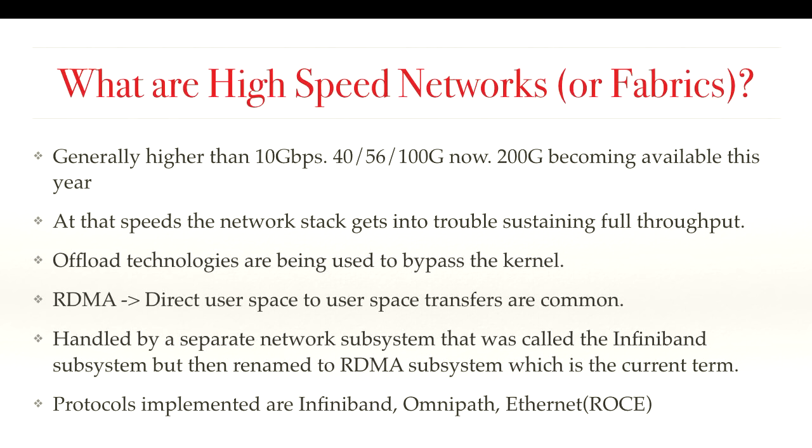At that speed, the regular network stack just gets into trouble sustaining that throughput — it's not possible — because the latency going through the network stack is extremely high compared to the speed of packets on the wire. So there are often techniques used to bypass the kernel. Then there's something called RDMA — remote DMA operations. You have two processes running on remote hosts and they can do direct memory transfers from user space memory between those two things without any kernel involvement. That is a requirement to do very high-speed transfer because you have no software in between — it's just the hardware doing the transfer.